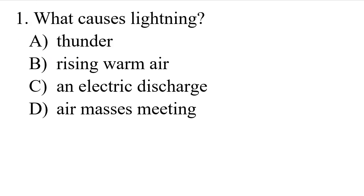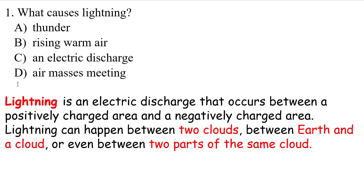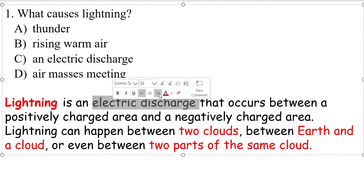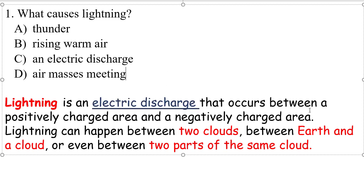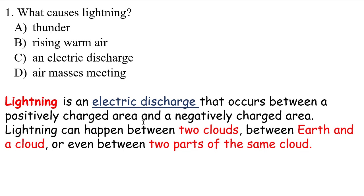Question 1: What causes lightning - thunder, rising warm air, an electrical discharge, or air masses meeting? Lightning is an electrical discharge that occurs between a positively charged area and a negatively charged area. It can happen between two clouds, between earth and cloud, or between two parts of the same cloud. The answer is C.